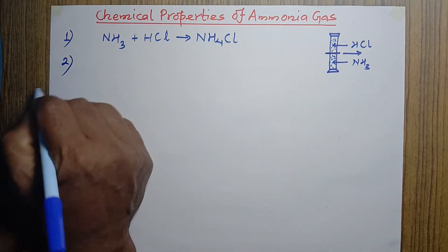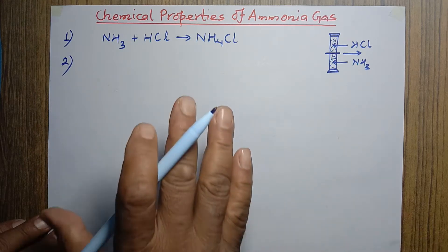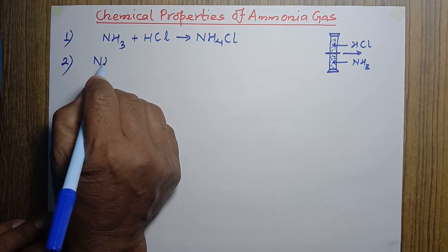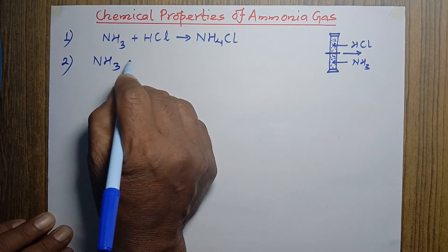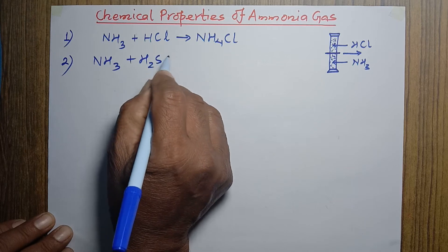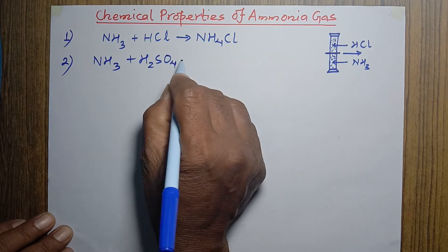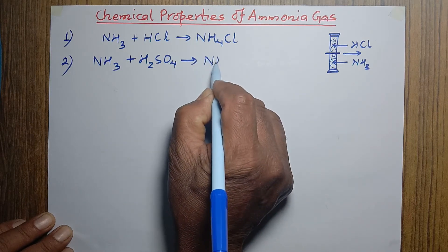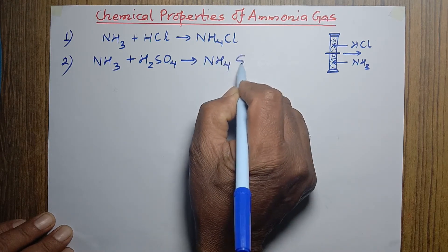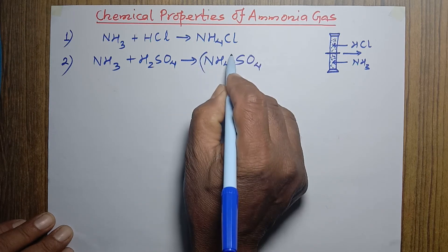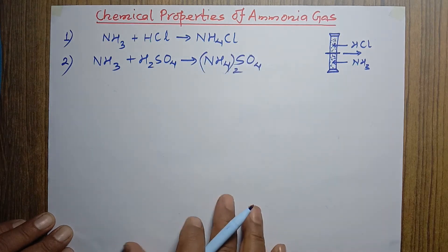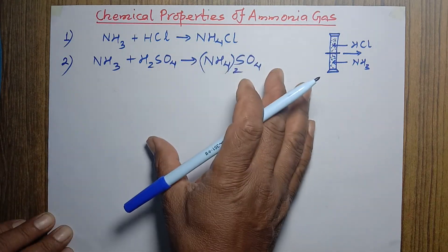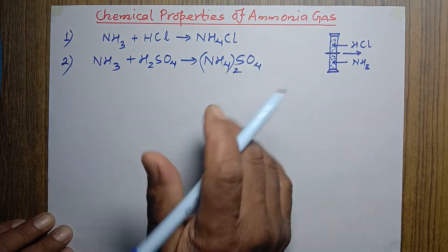Now let's talk about the second one. Ammonia reacts with acid to form salt. For example, taking sulfuric acid: when ammonia and sulfuric acid react with each other, a salt forms which is ammonium sulfate. Ammonium has valency 1 and sulfate has valency 2, that's why we write 2 in the formula. This reaction represents that ammonia gas reacts with sulfuric acid to form a salt called ammonium sulfate.